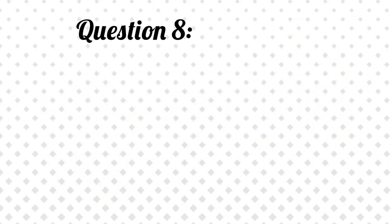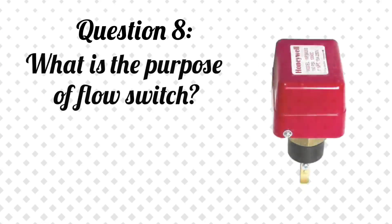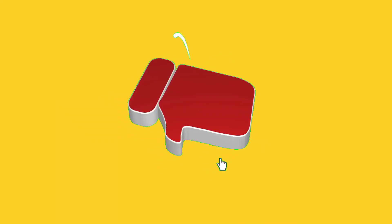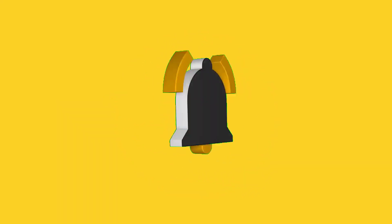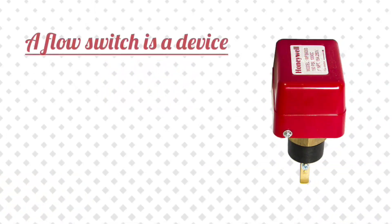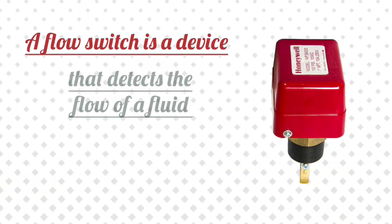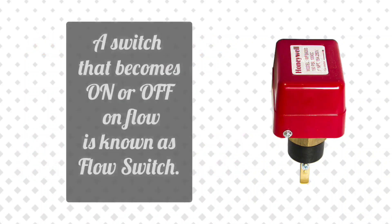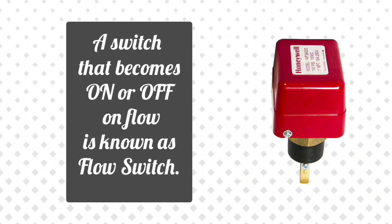Question 8: What is the purpose of a flow switch? Answer: A flow switch is a device that detects the flow of a fluid and provides an alarm or control signal at a specified set point. Simply put, a switch that turns on or off based on flow is known as a flow switch.